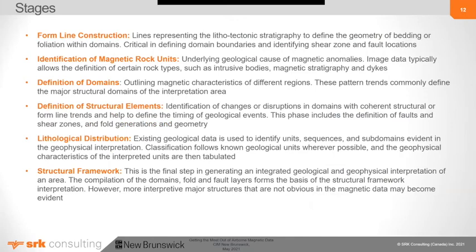There are various stages to mag interpretation. I'll talk about form line construction — where we define the grain of the lithotectonic stratigraphy or foliation, which is a very important first step. Then identification of magnetic rock units, definition of domains, definition of structural elements including faults, folds, and shear zones, lithological distribution to identify units and sequences, and finally putting it all into one coherent structural framework.